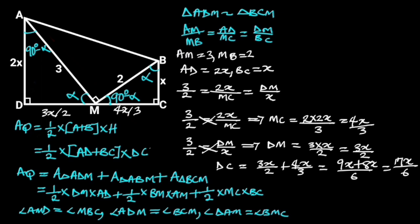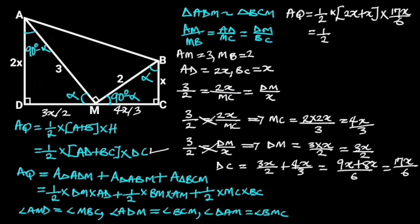Now let's plug the values of the sides of the trapezoid into the first formula. The area of the trapezoid equals 1/2 times (2X plus X) times 17X over 6, which equals 1/2 times 3X times 17X over 6. Simplifying — 6 divided by 3 is 2 — we get 1/2 times X times 17X over 2, which equals 17X squared over 4. Let's call this Equation 1.